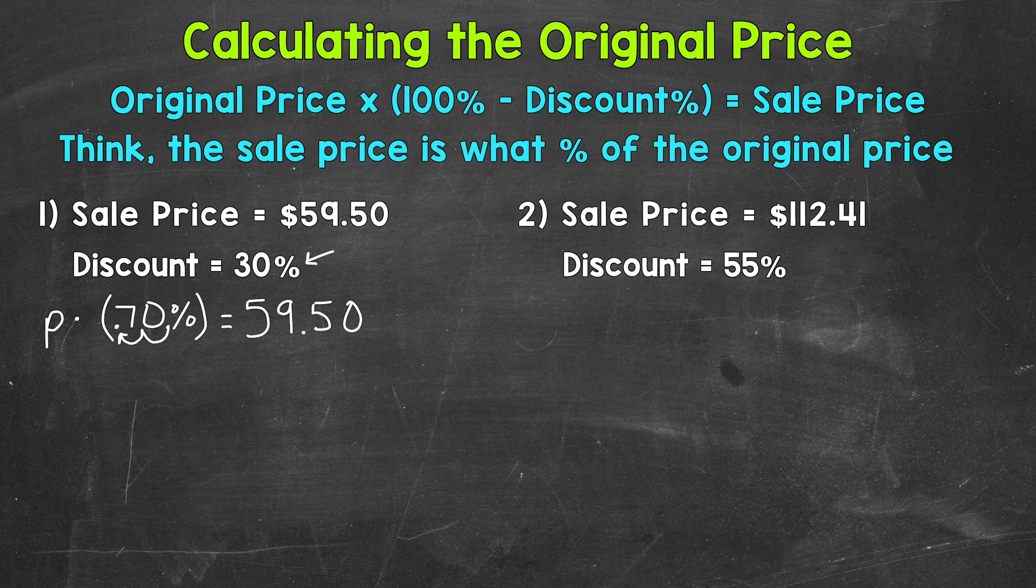So let's move on here and rewrite our equation with the percent in decimal form. So we have the original price, which is a variable of P because it's an unknown, times 70% as a decimal is 0.70. And that equals our sale price of 59.50.